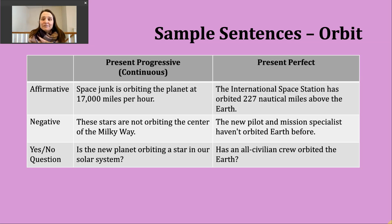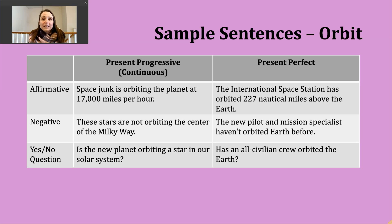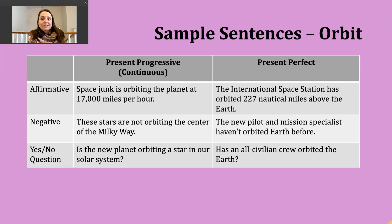For a negative present perfect sentence, start with have or has — whichever matches your subject — then insert not, then the participle. Some speakers contract these: hasn't or haven't. Example using haven't: the new pilot and mission specialists haven't orbited Earth before. This describes two new astronauts who have not circled a planet or traveled through space.